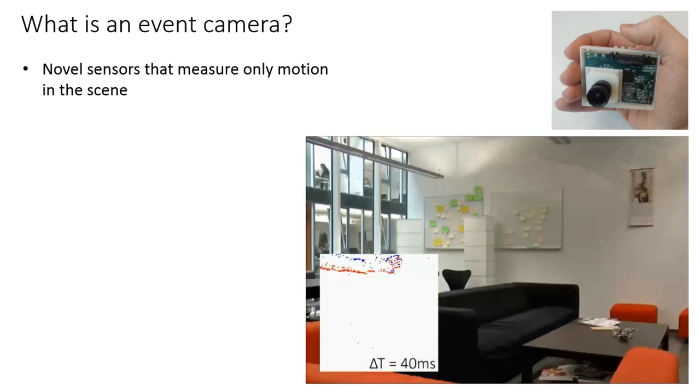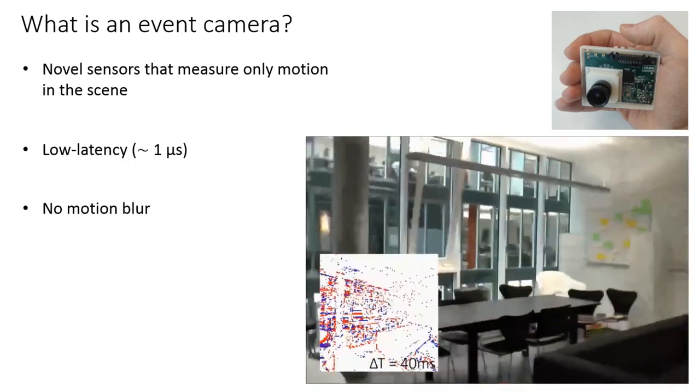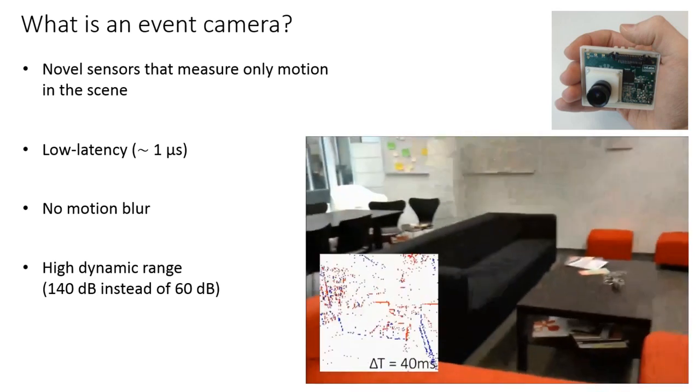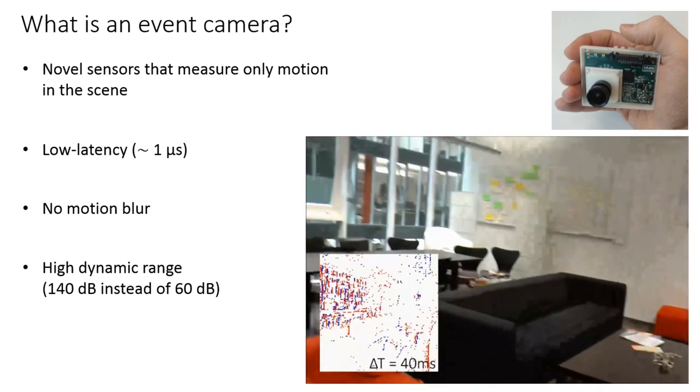Compared to standard cameras, event cameras have very low latency, they do not suffer from motion blur, and they have a very high dynamic range. For these reasons, they are well suited for visual odometry.